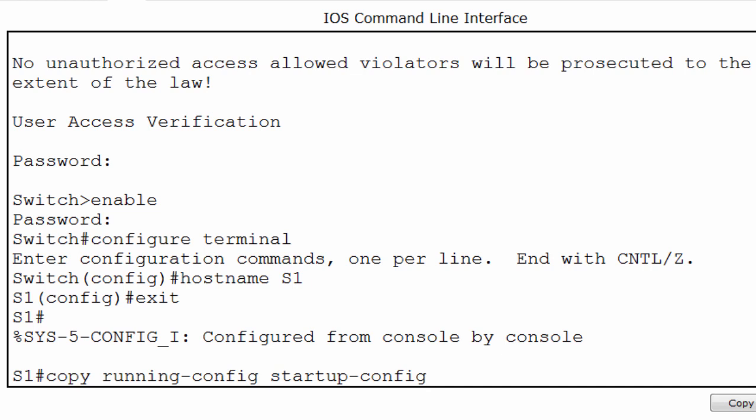The running configuration is the currently working configuration that's running in RAM memory. The startup configuration file is stored in NVRAM memory. The difference is that RAM is volatile and NVRAM is non-volatile. So if you copy the configuration to NVRAM, it will be available when the switch is restarted or reloaded.